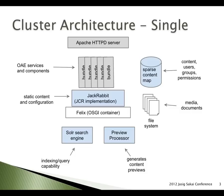Along the bottom you'll see a Solr search engine — this is sort of the second half of the NoSQL sparse content map. Sparse content is really good at scaling and managing key-value stores and managing a hierarchical set of data. But in moving to a NoSQL solution from a traditional RDBMS, you lose things like the ability to do SQL searches or joins. The Solr search engine brings some of that functionality back by allowing us to index things in sparse content and do queries to find documents. There's also a preview processor, which grabs new uploaded content and generates thumbnails.